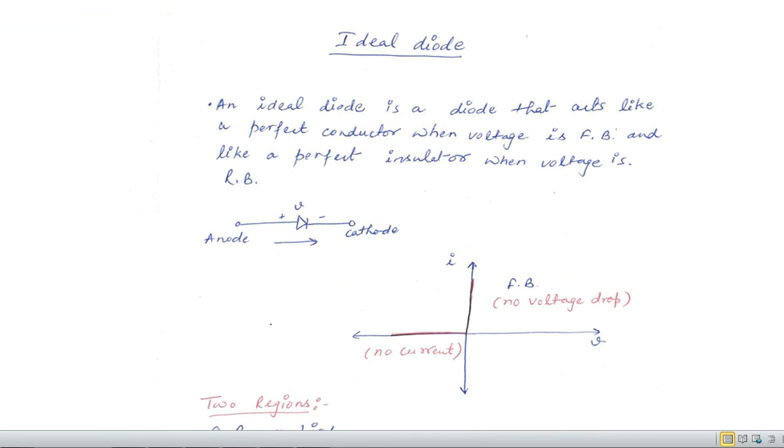Here is the basic concept of ideal diode. An ideal diode is a diode that acts like a perfect conductor when voltage is forward bias and acts like a perfect insulator when voltage is reverse bias. This is the symbol of diode.